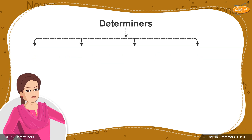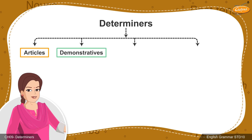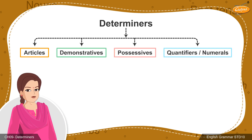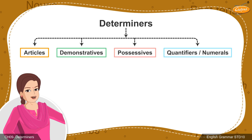This function is performed by articles, demonstratives, possessive determiners, quantifiers or numerals. These are the types of determiners.